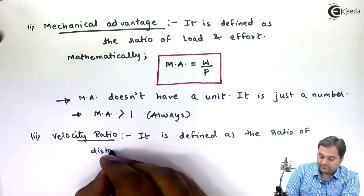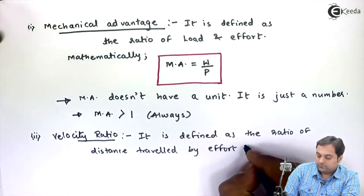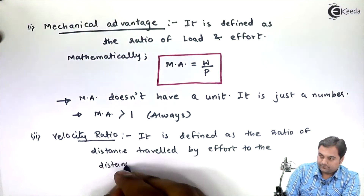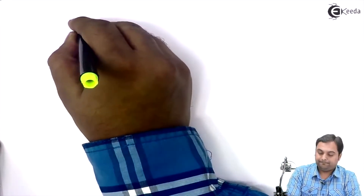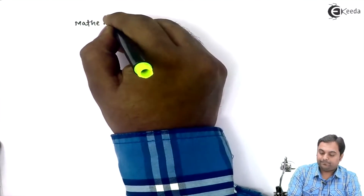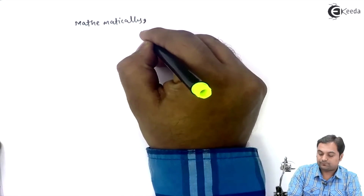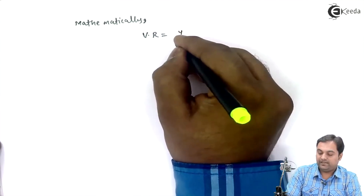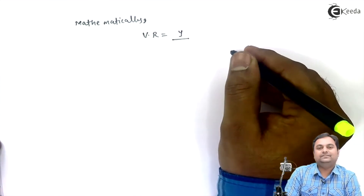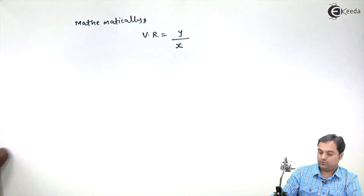Velocity ratio is defined as the ratio of distance traveled by effort to the distance traveled by load. Mathematically, velocity ratio is denoted by VR and it is equal to the distance traveled by effort — denoted by Y — divided by the distance traveled by load — denoted by X. So velocity ratio is Y upon X.